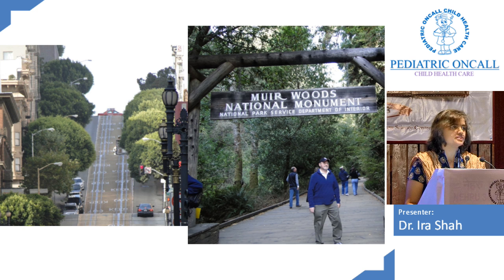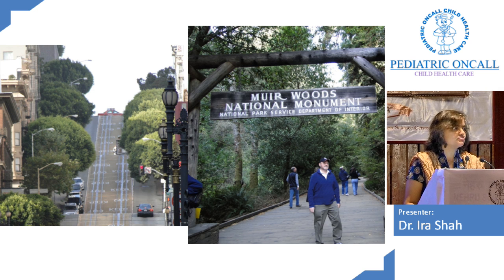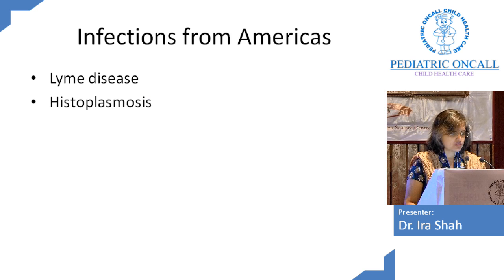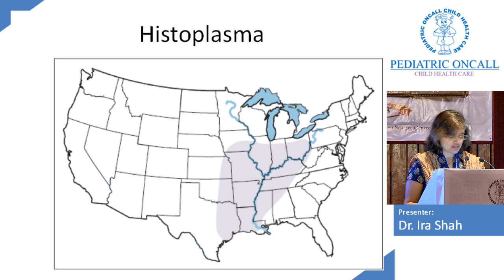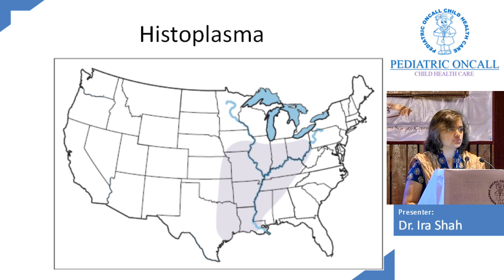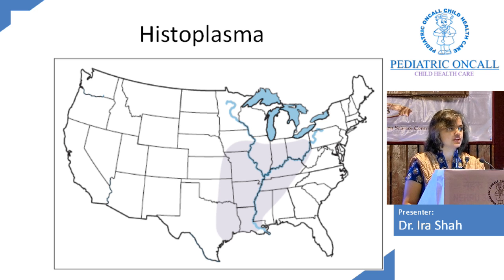Now let's talk about America. When we go to America we visit the Statue of Liberty, San Francisco, California, Niagara Falls, and forest areas. Infections from America include Lyme's disease and histoplasmosis. The area for histoplasmosis is the Mississippi belt and the Ohio region near the Great Lakes. So if you've traveled in that particular area, you could land up with histoplasmosis, which presents just like tuberculosis — primary complex, primary progressive lesions — most resolving on their own.